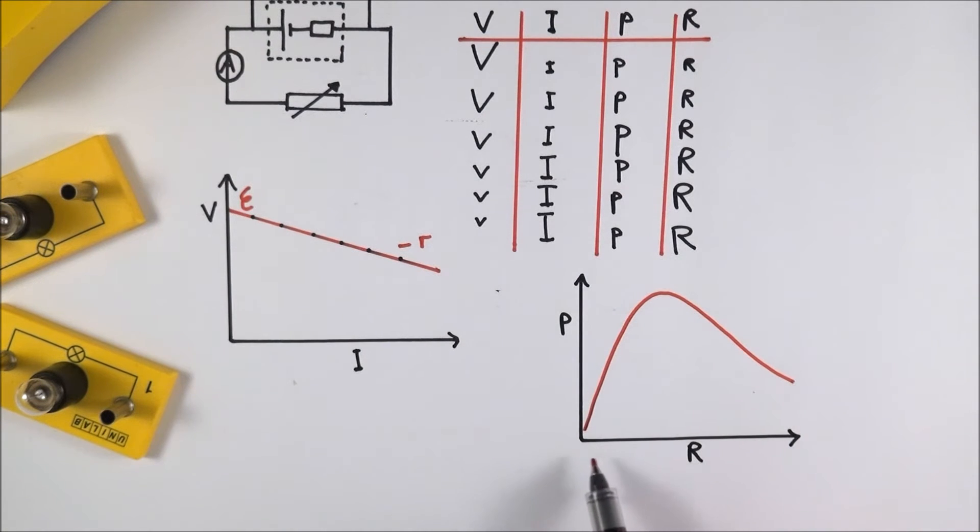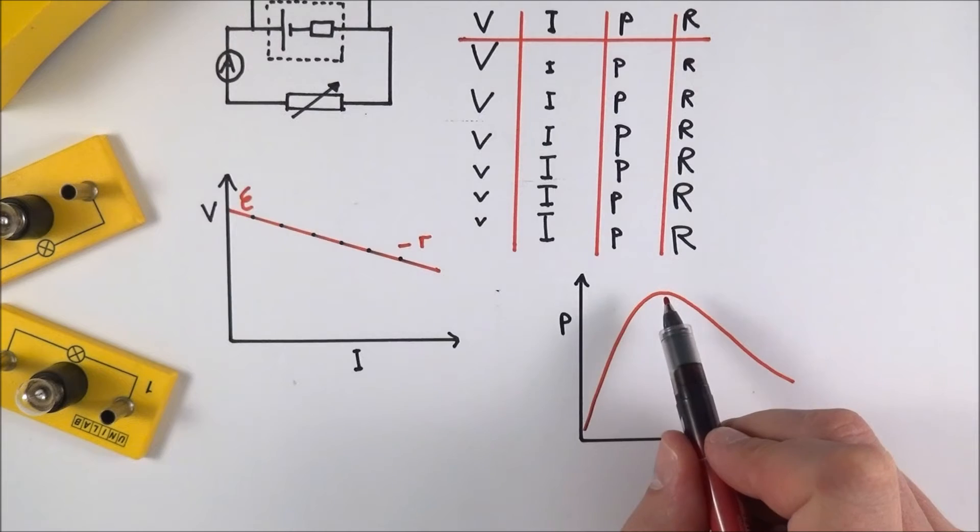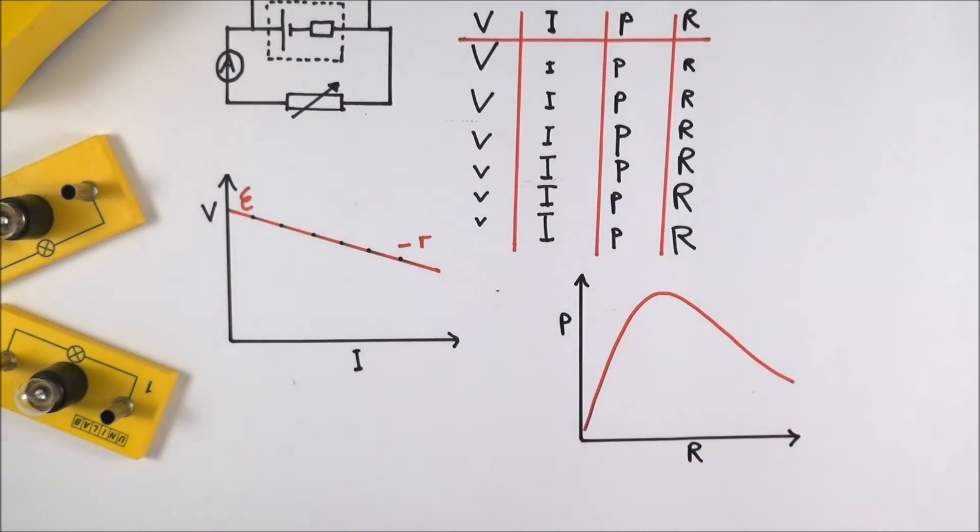As the resistance gets bigger, we go to the maximum power output that that cell can actually provide. This is maximum power, not maximum efficiency. This is the maximum power theorem that we're looking at here.